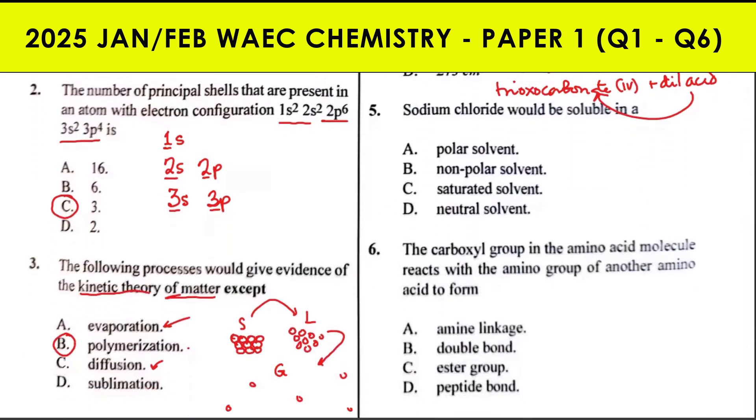Question 5: Sodium chloride would be soluble in what? Sodium chloride is an ionic compound made of sodium ion and chloride ion. Being an ionic compound, the properties of ionic compounds are that they are soluble in polar solvent. Ionic compounds dissolve in polar solvent because polar solvents are made up of a dipole, like water.